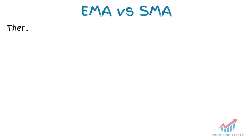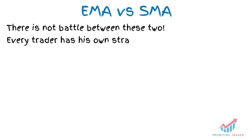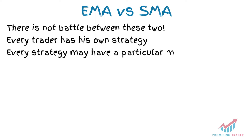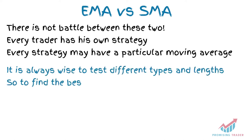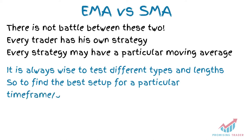EMA versus SMA. There is no real winner between these two. Every trader has a favorite strategy, and every strategy may have a particular type of moving average or set of them. Whenever you want to make your analysis, it is wise to test different time frames and different lengths of moving averages so you can better find which one gives you the best reading. Often you find that on a particular security, a particular set of moving averages works better than others, but it's all very relative and needs testing.